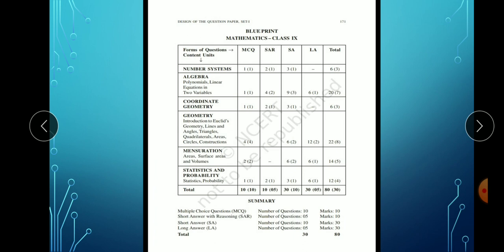See, we have a blueprint over here for mathematics. Number system - very first MCQ 1, then SAR type questions 2 on number system. Short answer type - 3 questions we ask, total 6 marks. Then we have algebra - 1 question on MCQ, 2 questions on SAR, 3 questions on short answer, and 1 question on long answer.